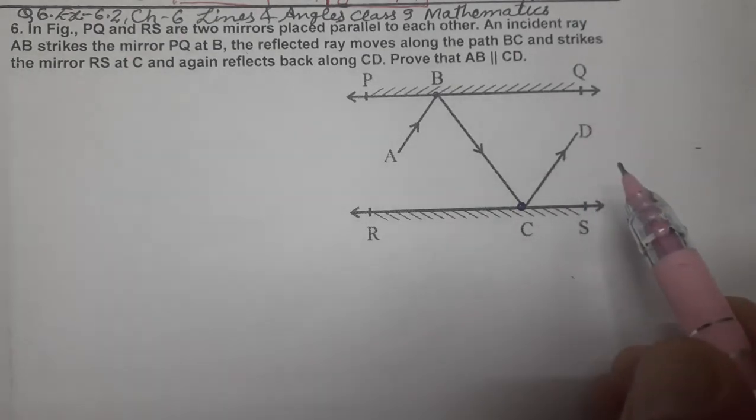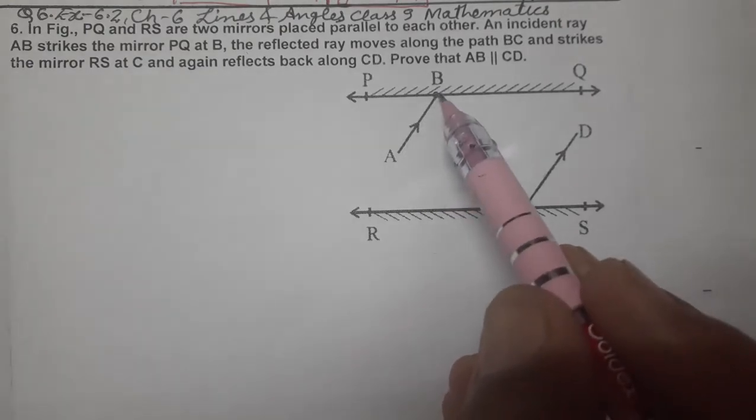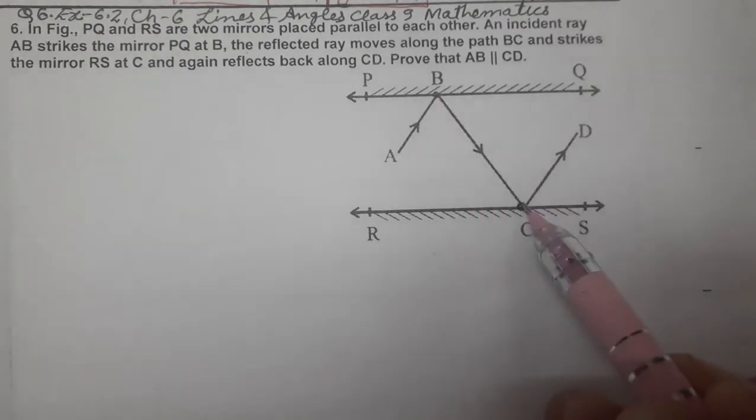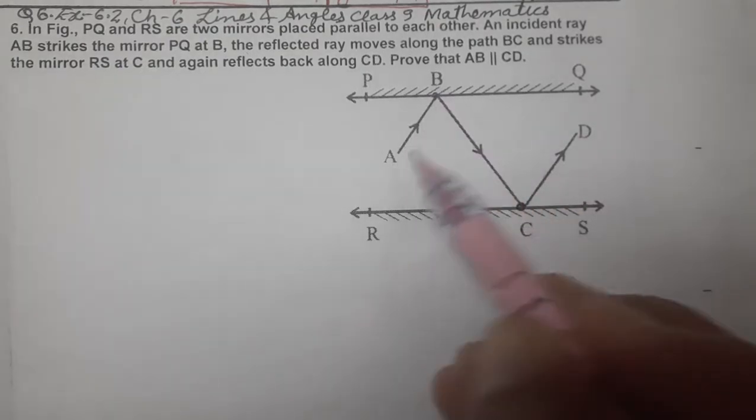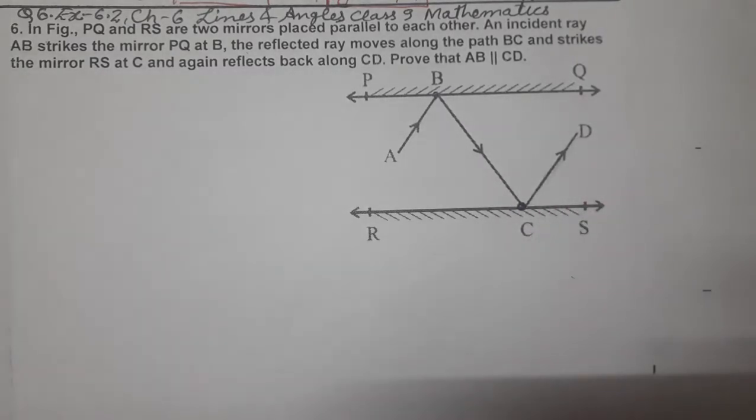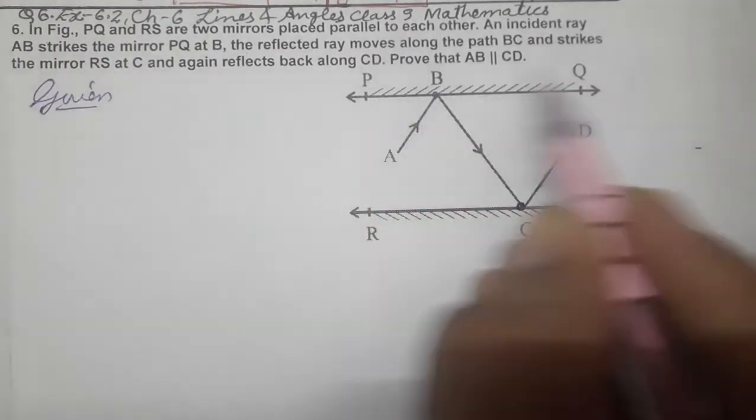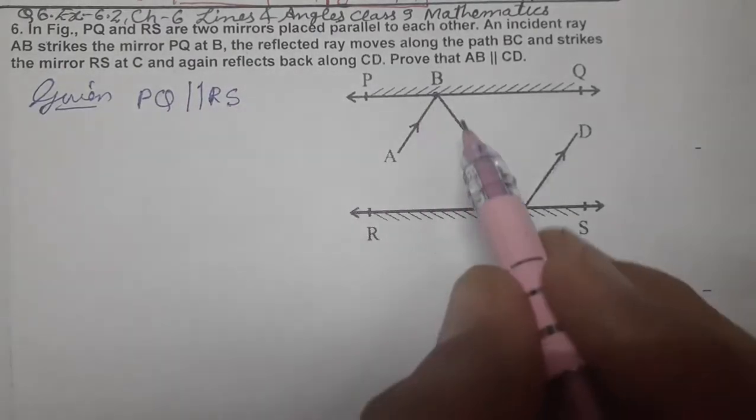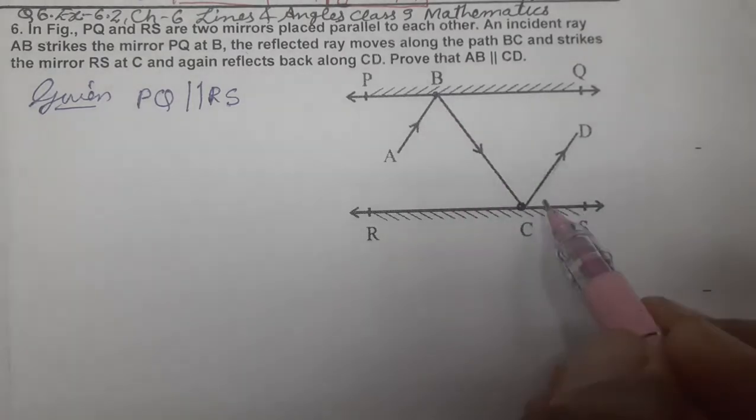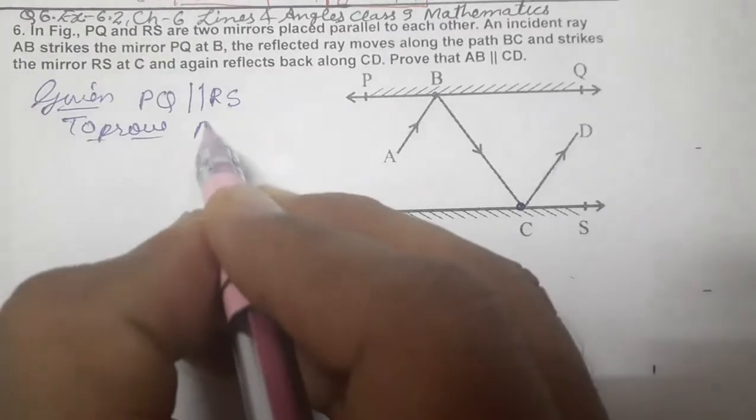We know about mirrors - when a sun ray strikes a mirror, it reflects. The incident ray reflects. Here we have a second mirror, so it will reflect again. We have to prove that line AB is parallel to CD. Let's start the proof. What is given to us? Given: PQ parallel to RS.